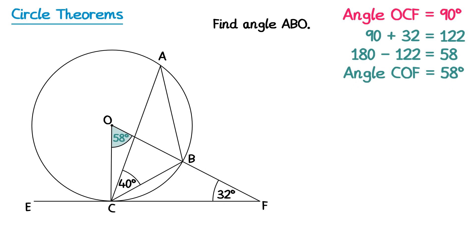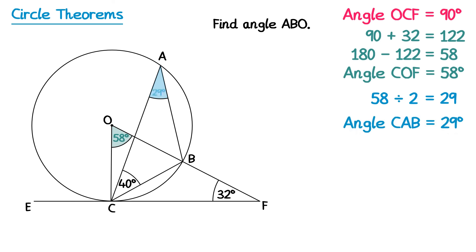Next we're going to look at angle CAB. You should remember that the angle at the centre is twice the angle at the circumference. We can see the angle at the centre from chord CB is 58 degrees. So the angle chord CB makes at the circumference must be half of 58. If we do 58 divided by 2, which is 29, we know that this angle must be 29 degrees.